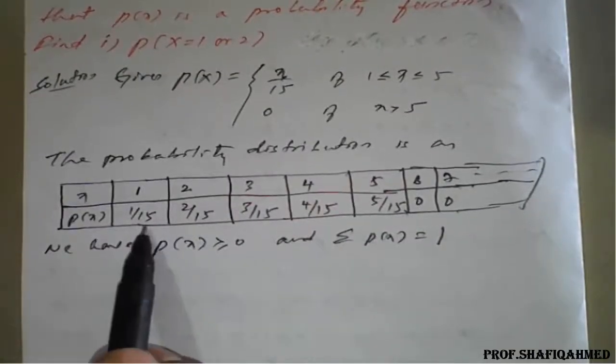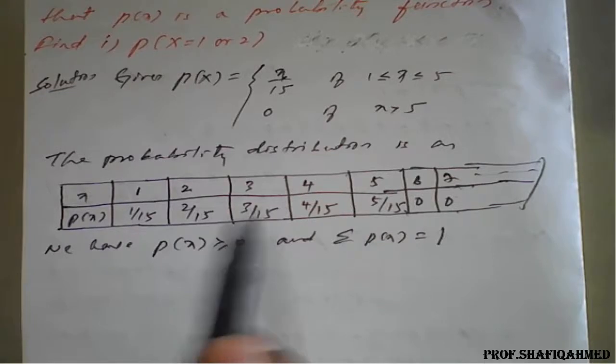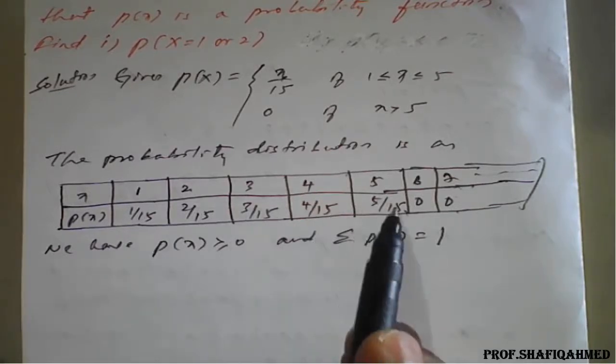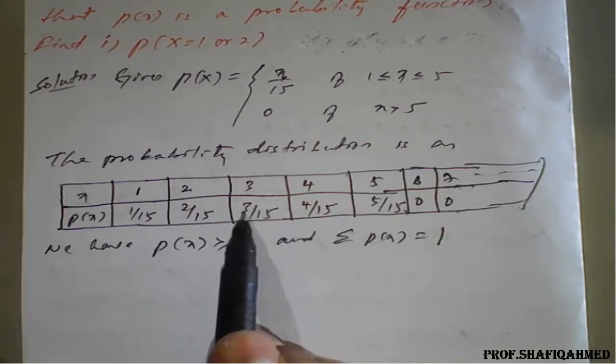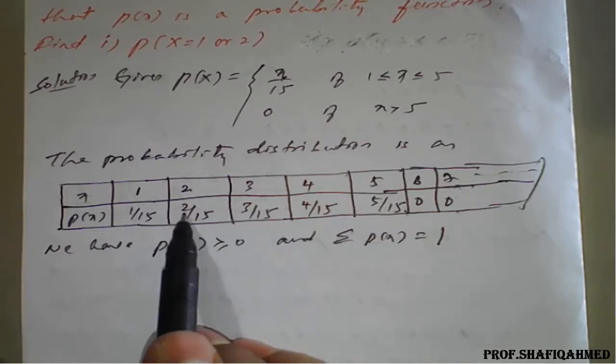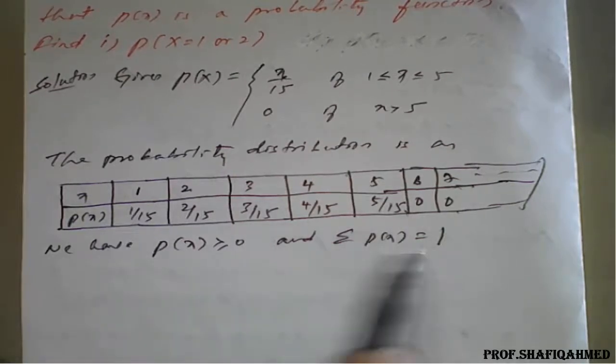You can check: 1 upon 15 plus 2 upon 15 plus 3 upon 15 plus 4 upon 15 plus 5 upon 15. You add 5 plus 4 is 9, 9 plus 3 is 12, 12 plus 2 is 14, 14 plus 1 is 15, 15 upon 15 is 1.